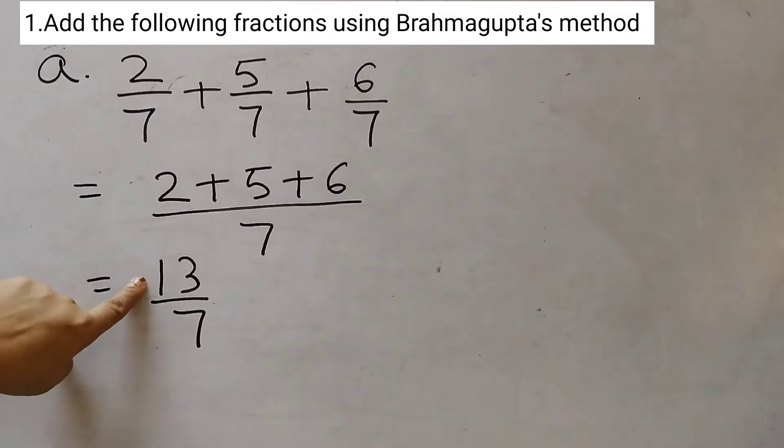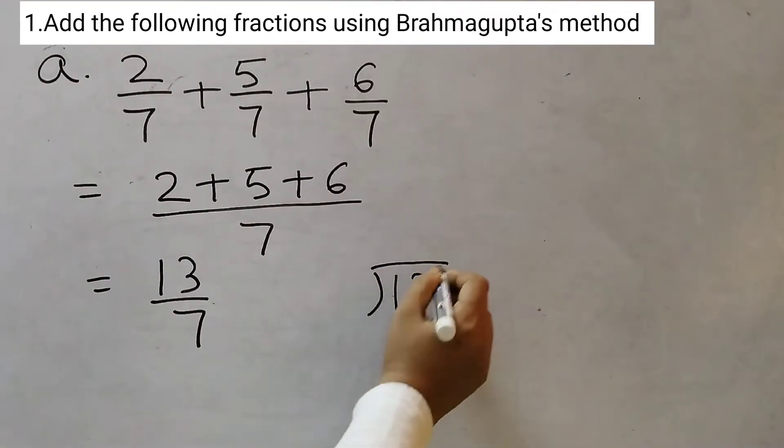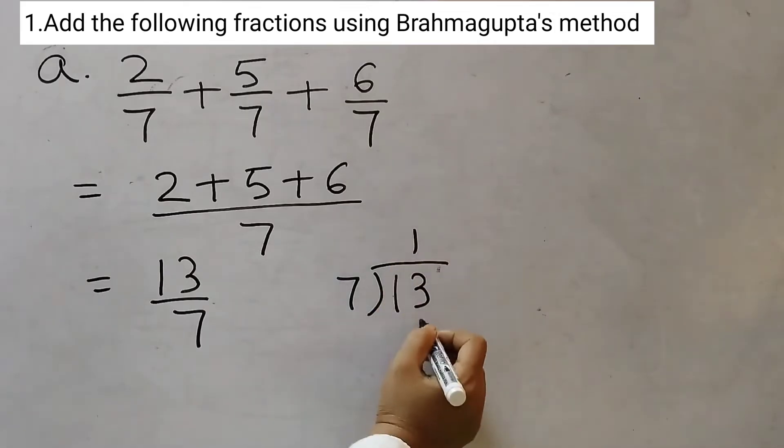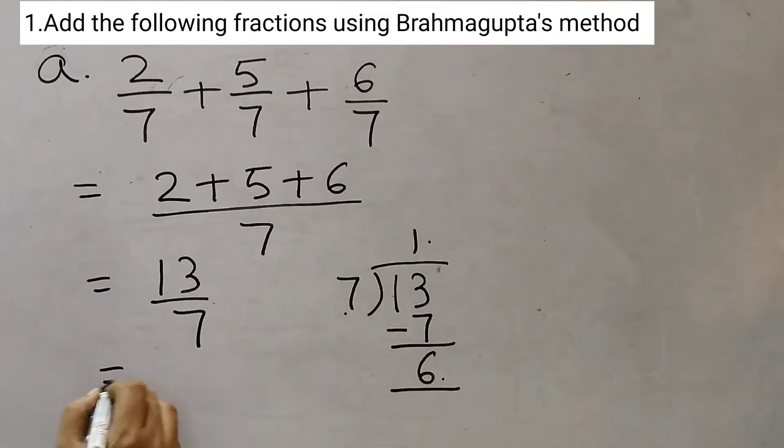Now here you see the numerator is big and the denominator is small. So if we want we can convert it to a mixed number. And how do we do that? You divide 13 by 7. 7 once a 7 subtract we get 6. So 1, 6, 7.